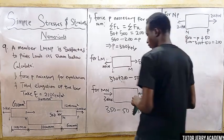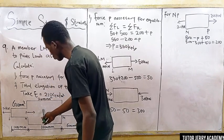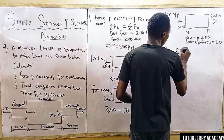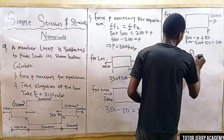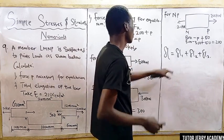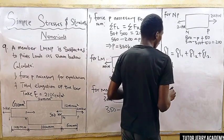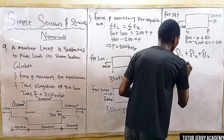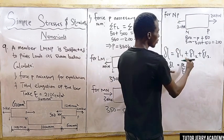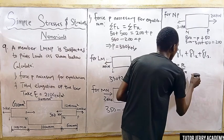We are going to find the total elongation of the bar. Naming the sections as section one, section two, and section three, the total elongation equals elongation of section one plus elongation of section two plus elongation of section three. We know that the elongation formula is δ = PL over EA.